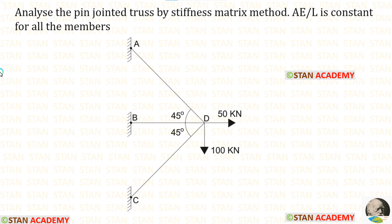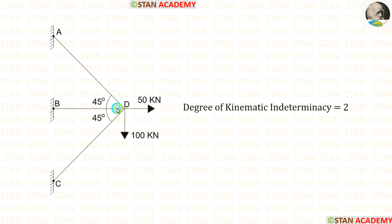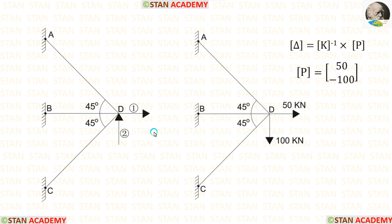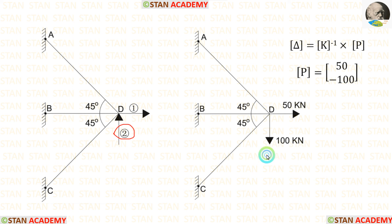Now let us see one more problem. In this problem AE/L is constant for all members. At point D there is no support, so there are horizontal and vertical deflections, making the degree of kinematic indeterminacy equal to 2. For the coordinates diagram, we remove loads from joint D and apply horizontal and vertical supports. In the first coordinate we have a point load of 50 kN, and in the second coordinate a point load of 100 kN, but with opposite direction so we apply a negative sign.